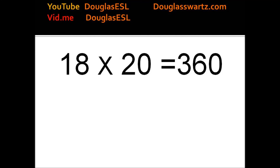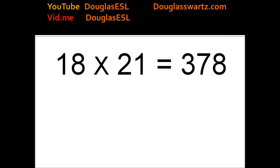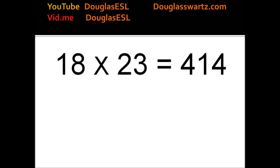18 times 20 equals 360. 18 times 21 equals 378. 18 times 22 equals 396. 18 times 23 equals 414.